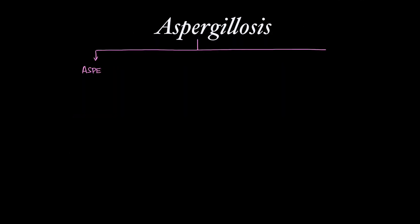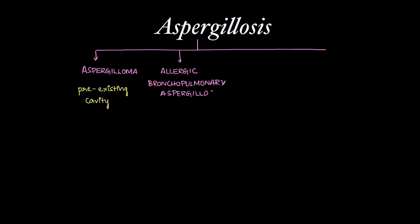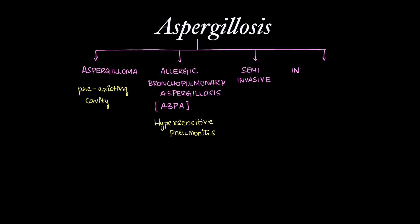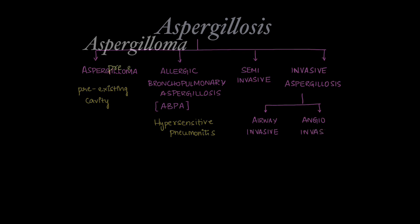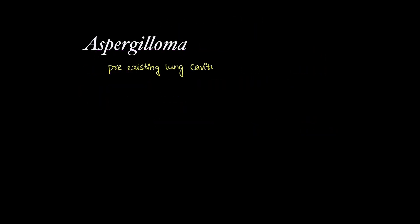Moving on to aspergillosis — infection can present in various forms. Aspergilloma can occur in a pre-existing cavity. There can be allergic bronchopulmonary aspergillosis, known as ABPA, which is a form of hypersensitivity pneumonitis. There can also be semi-invasive aspergillosis or invasive aspergillosis, the latter being of two types: airway invasive aspergillosis and angio-invasive aspergillosis.